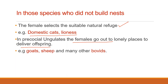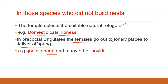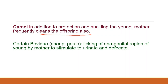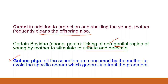In case of camels, maternal attention is poorly developed immediately after parturition. In addition to protection and suckling the young, the mother frequently cleans the offspring also. In certain bovids like sheep and goats, licking of the anogenital region of the young by the mother is frequently observed, perhaps to stimulate the young to urinate and defecate. These excretions in guinea pigs and many canines are consumed by the mother, perhaps in an effort to avoid their specific odors which generally attract predators.